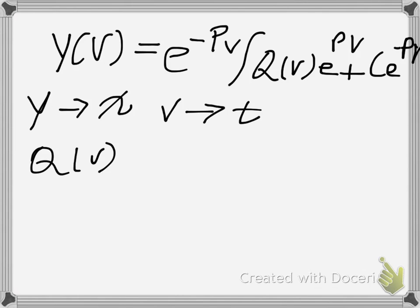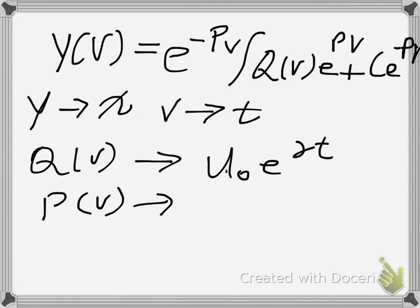Qv in this equation is mu naught... Not mu. Goodness. u naught e to the gamma t. And p of v is gamma.